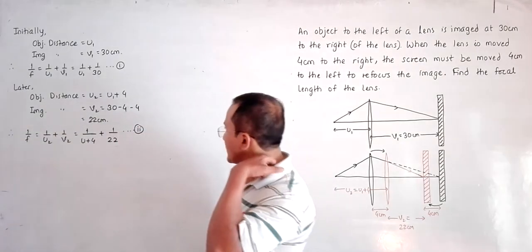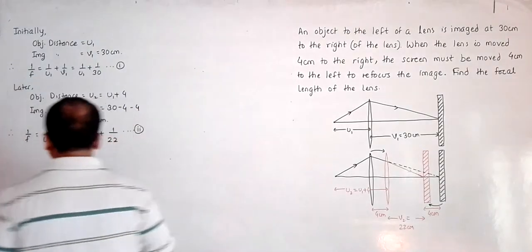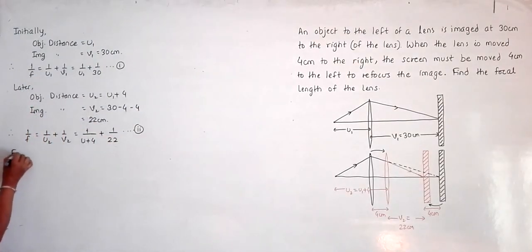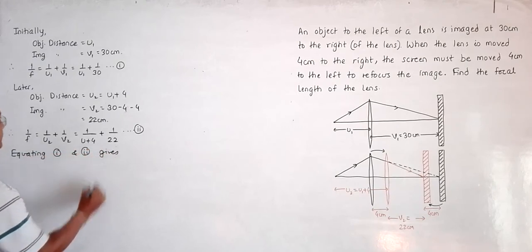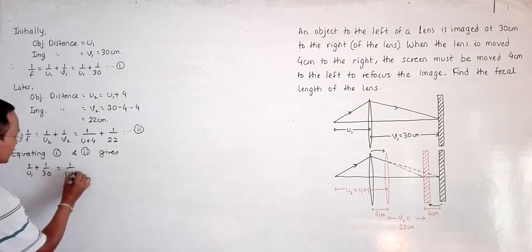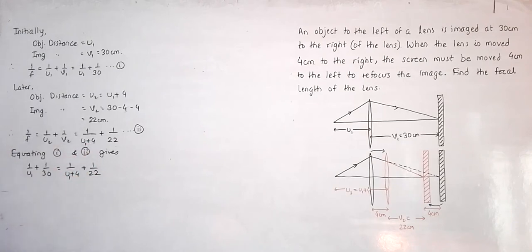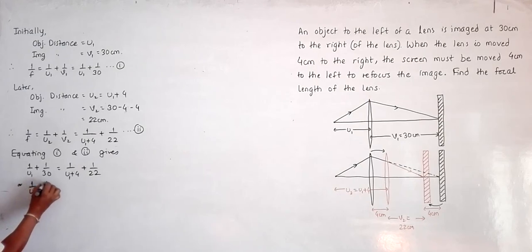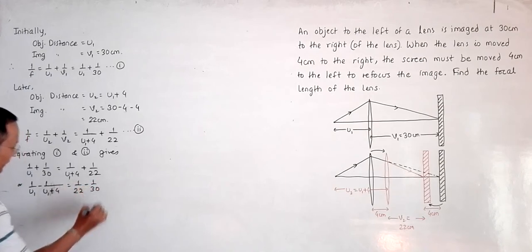Since both expressions equal 1/f, we equate equations 1 and 2: 1/u1 + 1/30 = 1/(u1 + 4) + 1/22. Rearranging by switching sides gives: 1/u1 − 1/(u1 + 4) = 1/22 − 1/30.